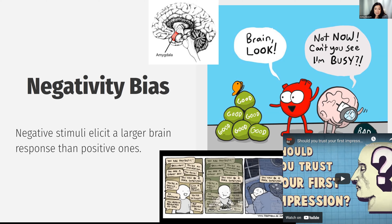Negativity bias is actually stronger when it involves a threat to our survival. If we see an angry face, we are biased to pay attention to that negative emotion. Because of the surge in activity in a critical information processing area of the brain, our behaviors and attitudes tend to be shaped more powerfully by bad news, experiences, and information. The media tends to take advantage of this particular phenomenon.